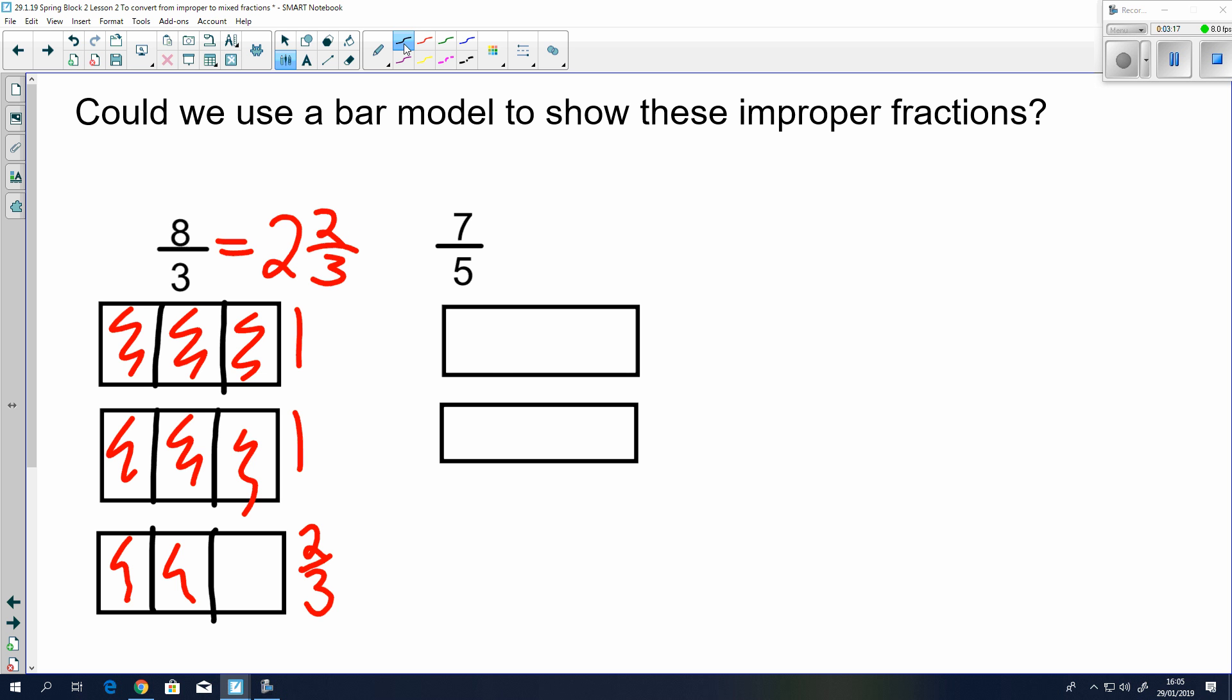If we're looking at 7 fifths, again we divide into 5 equal pieces. And we want to color 7 in. 1, 2, 3, 4, 5, 6, 7. That's 7 fifths. How many full bars have we got colored in? 1. And then we have 2 fifths for the next one. So, that's the same as 1 and 2 fifths.